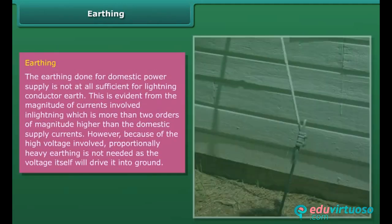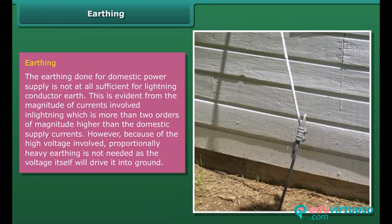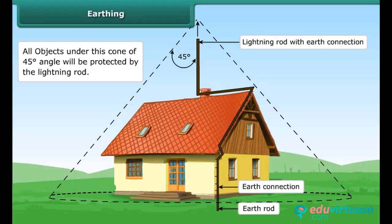The earthing done for domestic power supply is not sufficient for a lightning conductor earth. This is evident from the magnitude of currents involved in lightning, which is more than two orders of magnitude higher than domestic supply currents. However, because of the high voltage involved, proportionally heavy earthing is not needed, as the voltage itself will drive it into the ground.